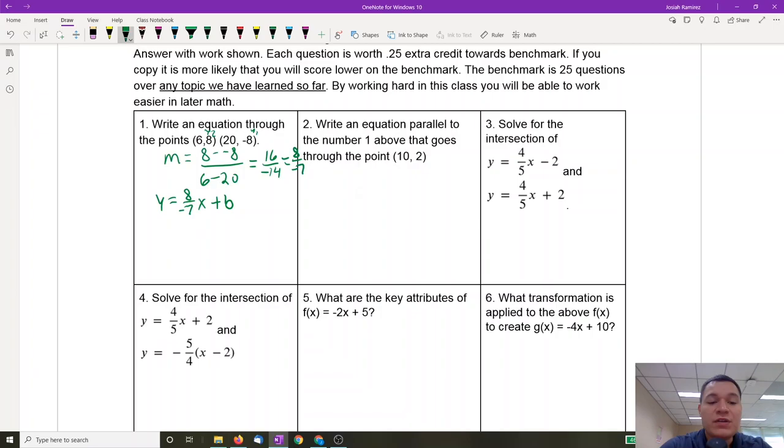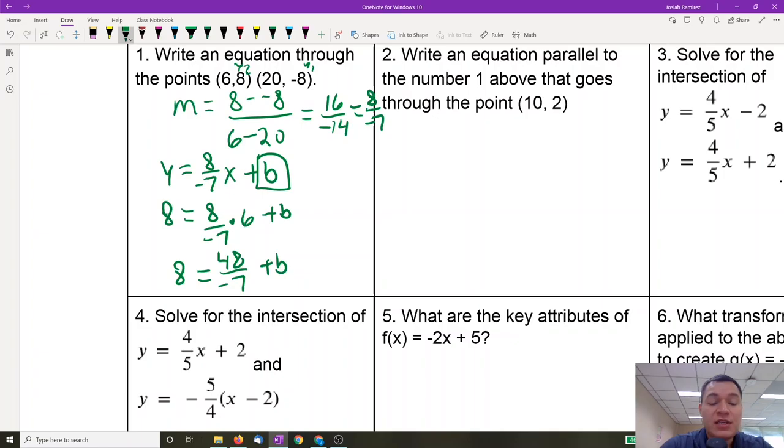Then we need to find what b is equal to. We don't know what b is, but we do know what y is and x is. So we're going to take one of these coordinates from the top, and I'm going to take (6, 8). I'm going to put 8 for y, and I'm going to put 6 for x. Then we're going to multiply 8 over negative 7 times 6. 8 times 6 is 48. So (-48/7) = 8 + b. We're going to need to move 48 over negative 7 to the other side. We're going to do that by adding it. We're going to add 48 over 7 to the other side: (48/7) + 8.